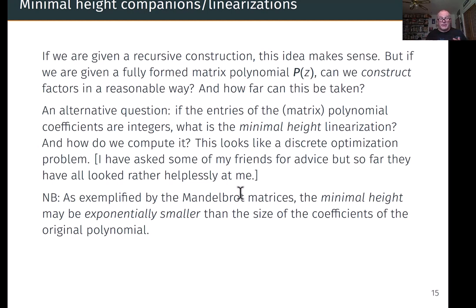Why we want to do this is because the Mandelbrot matrix example shows that the minimal height for the Mandelbrot polynomials, which is one for any dimension, can be exponentially smaller than the size of the coefficients of the original polynomial. Mandelbrot polynomials' coefficients grow exponentially in the degree. It's doubly exponentially in n for the recurrence relation. So they grow really, really quickly. And so the conditioning of matrix polynomials can be very, very large in comparison with the conditioning of the minimal height linearization.